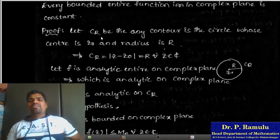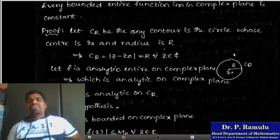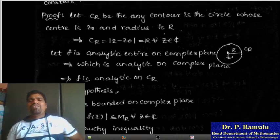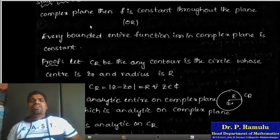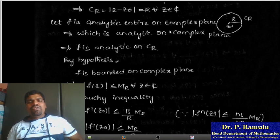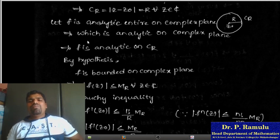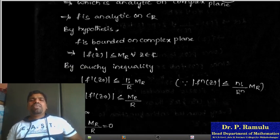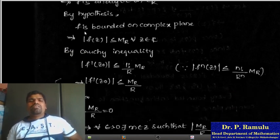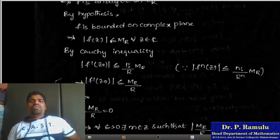Proof. Let C_r be any circle whose center is z₀ and radius is r. Since f is an entire function, f is analytic on the entire complex plane, which implies f is also analytic on C_r. By hypothesis, f is bounded on the complex plane, so |f(z)| ≤ M for all z on C_r.